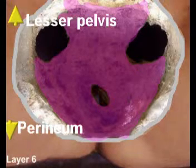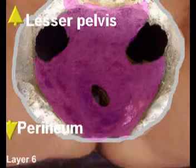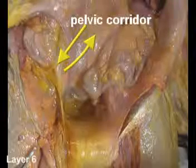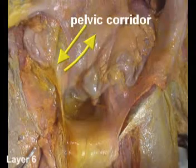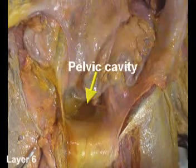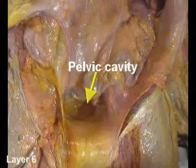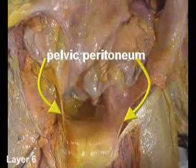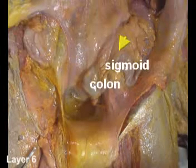The peritoneum contains the following: pelvic corridor, pelvic cavity, pelvic fascia and peritoneum, and sigmoid colon.